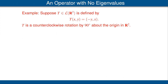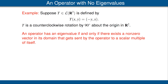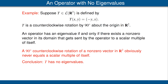Let's look at an example to illustrate the definition of eigenvalue. Suppose T is the operator on R² defined by T(x, y) = (-y, x). This operator sends (1, 0) to (0, 1) and (0, 1) to (-1, 0), so T is counterclockwise rotation by 90 degrees about the origin in R². An operator has an eigenvalue if and only if there's a non-zero vector sent to a scalar multiple of itself. Since 90-degree counterclockwise rotation of a non-zero vector clearly never equals a scalar multiple of itself, we conclude that T has no eigenvalues.